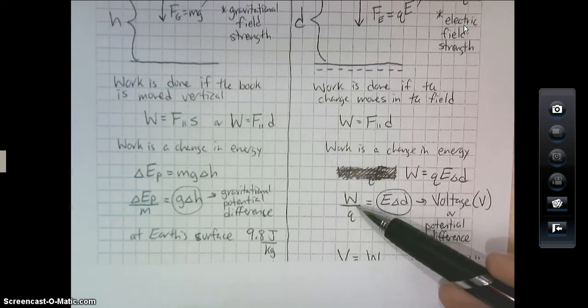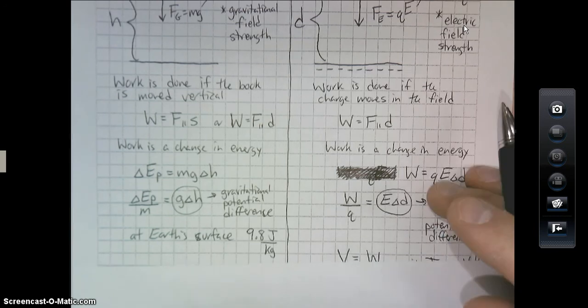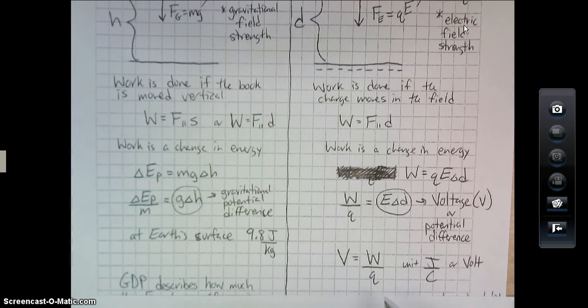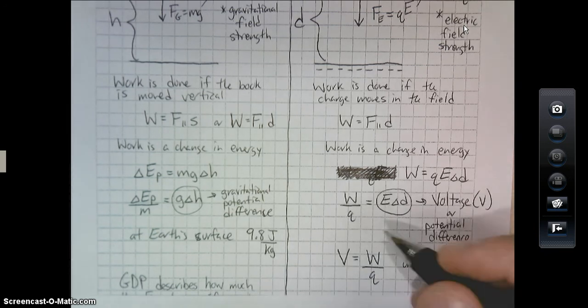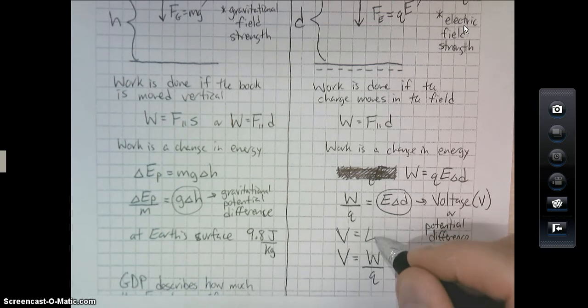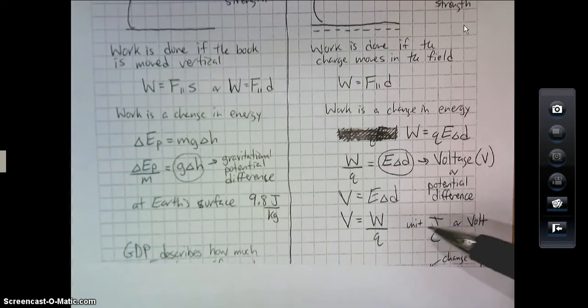So, it has a little easier formula here. Instead of having to have E times delta D, you can just replace it with V. Now, I would also like to mention that V can equal E delta D. You could have that in there.